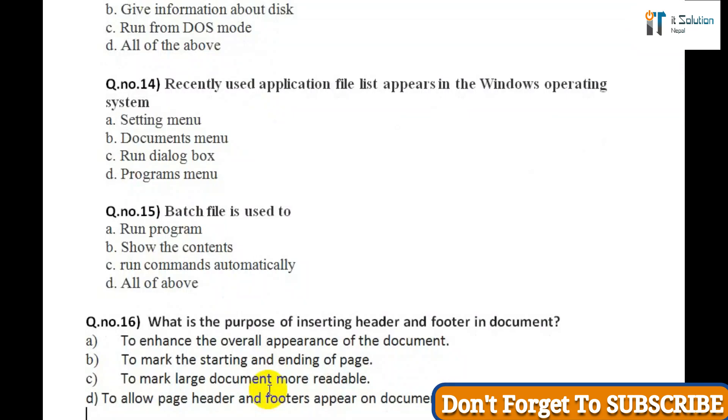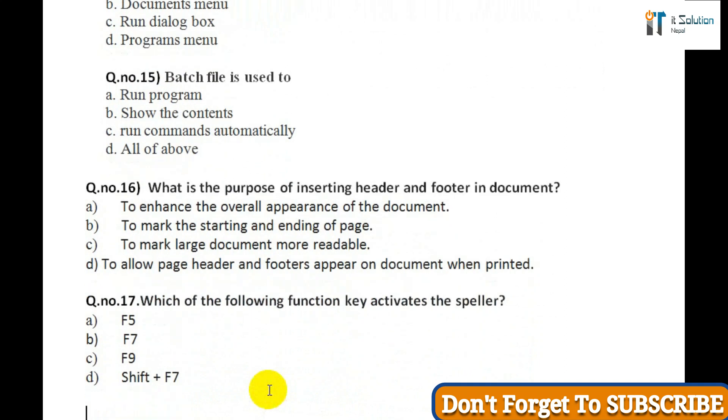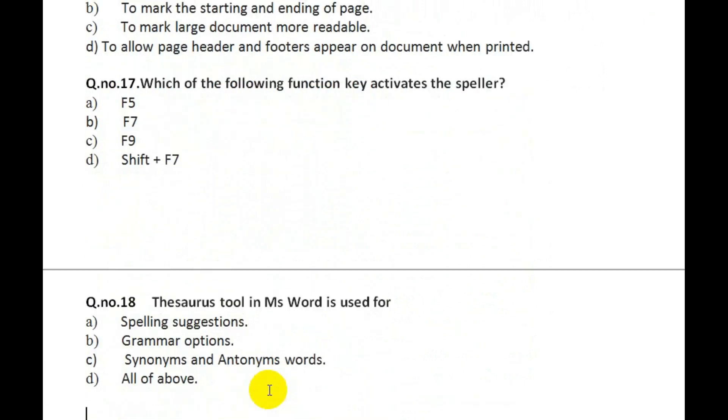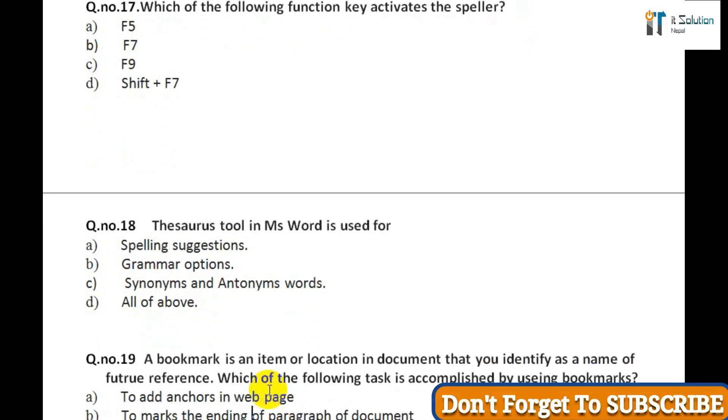Question thirteen: Scandisk is to detect: A) Type the disk, B) Give information about disk, C) Run from DOS mode, D) All of the above. Question fourteen: Recently used application file list appears in the Windows operating system: A) Settings menu, B) Document menu, C) Run dialog box, D) Programs menu. Question fifteen: Batch file is used to: A) Run program, B) Show the content, C) Run commands automatically, D) All of the above.